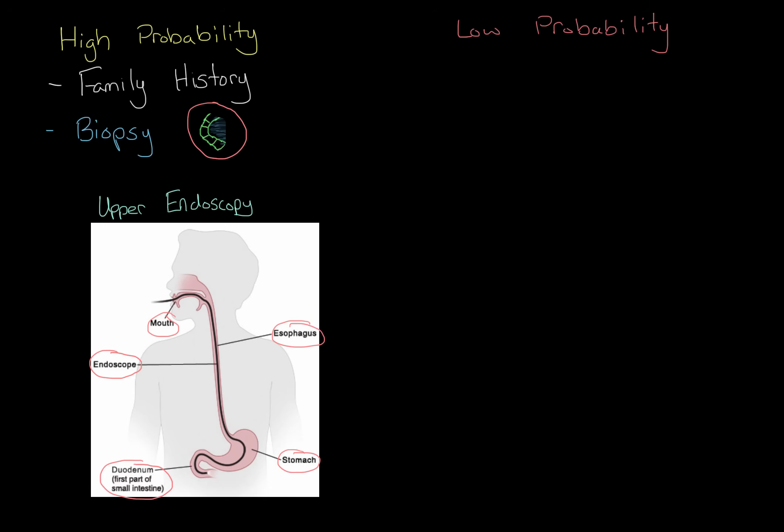Now, let's say you may have a low probability instead. If, for example, you don't have a lot of family members who have celiac disease or even any other autoimmune disease, you may not want to subject the patient to this really invasive procedure. So first, what we'll do is a few blood tests. We're mostly going to be looking for different antibodies that are characteristic of celiac disease, because remember that this is an autoimmune disease.